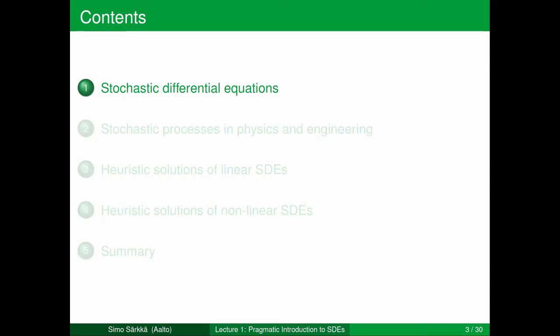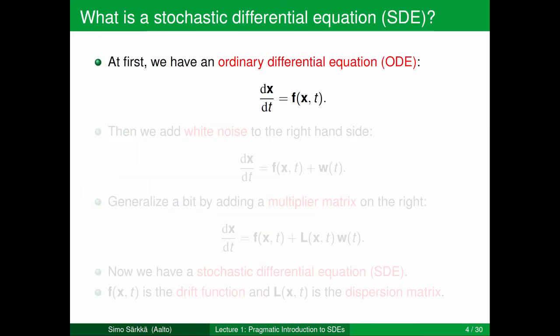Let's start with an introduction to what are stochastic differential equations. We can think that we start with an ordinary differential equation of this form: we have some vector x whose time derivative is equal to f, a function of x and time t. This kind of model describes some physical phenomenon, for example the motion of a car. If we know f on the right-hand side, we can determine the trajectory exactly by solving the equation.